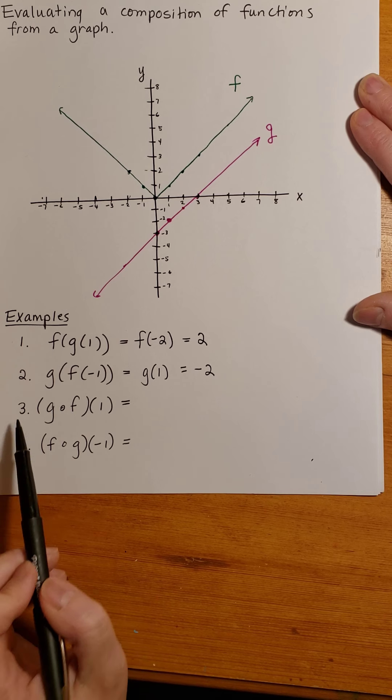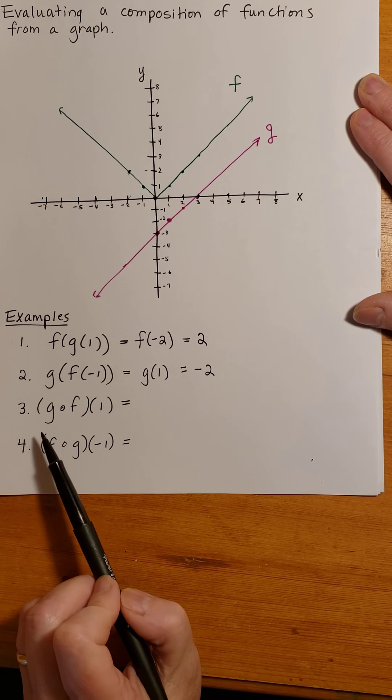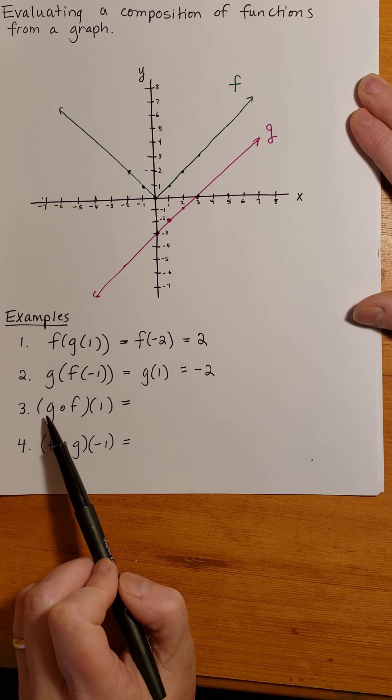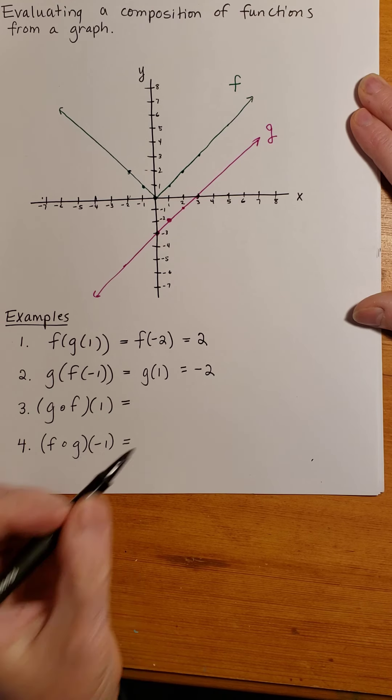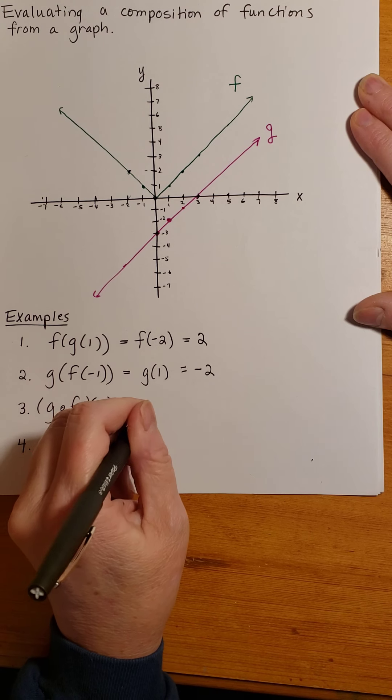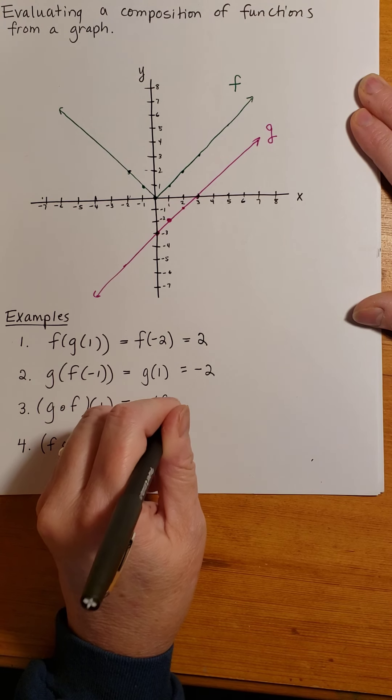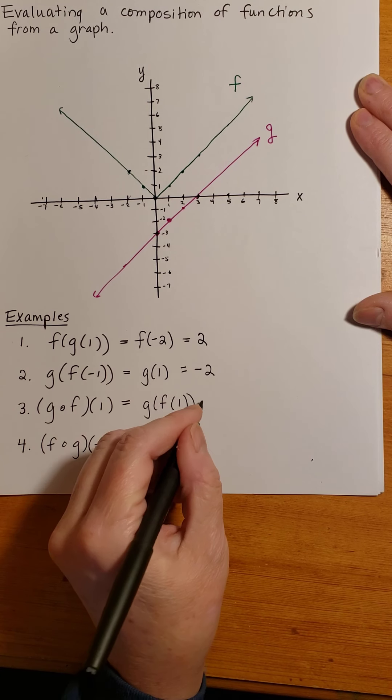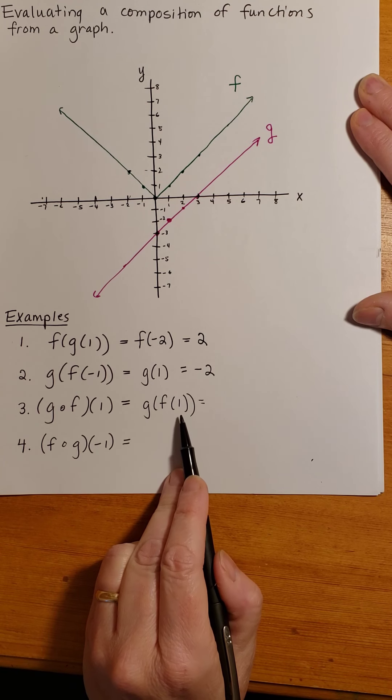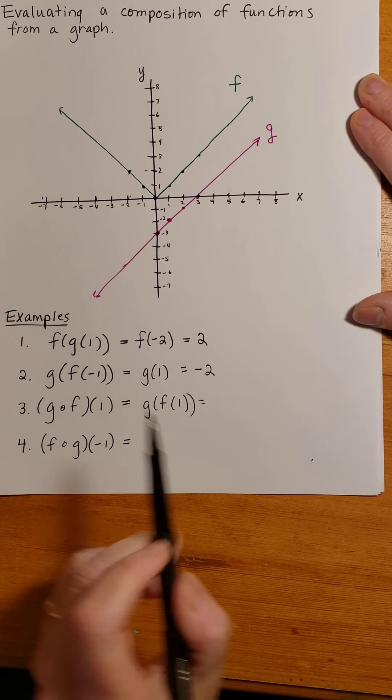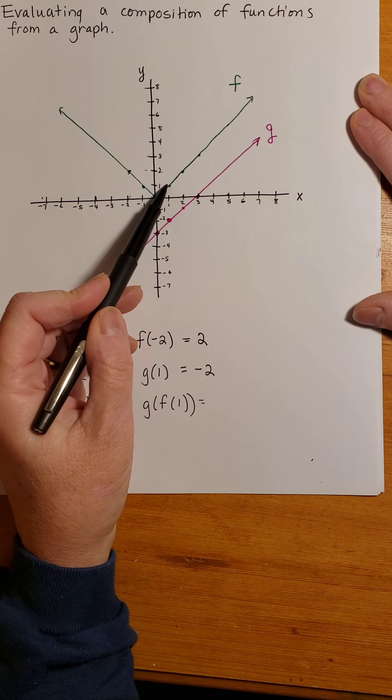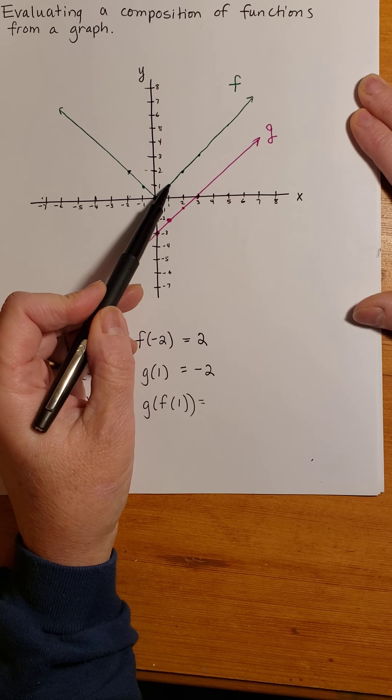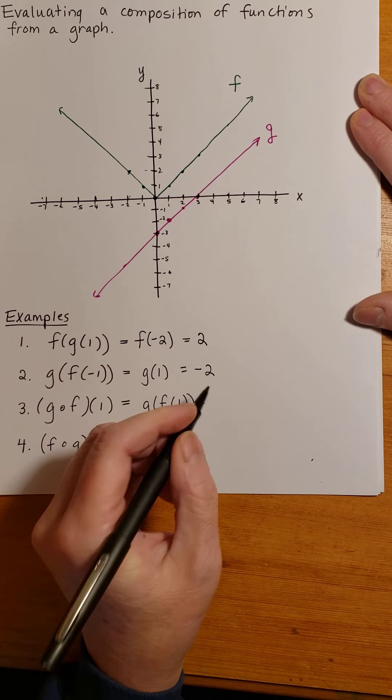In example 3, notice I have the notation here, g composed with f. I want to first write this using the definition, and the definition says that g composed with f is g of f of 1. Now we can go ahead and find f of 1. f of 1 is 1, because when I plug in 1 and take a vertical path and then horizontal path to the y-axis, I'm at 1.